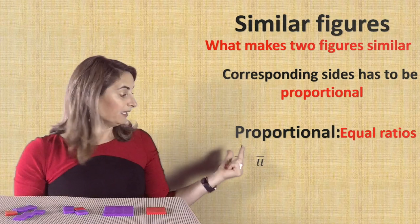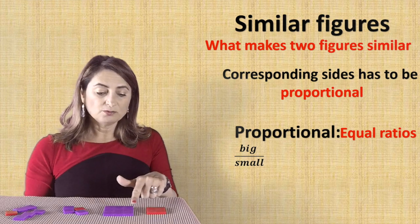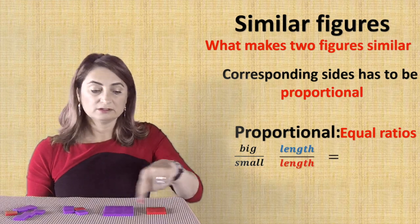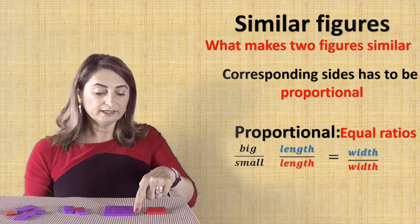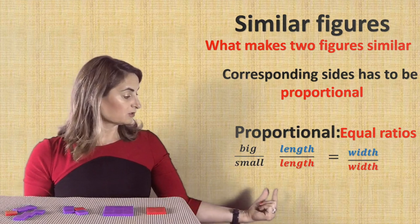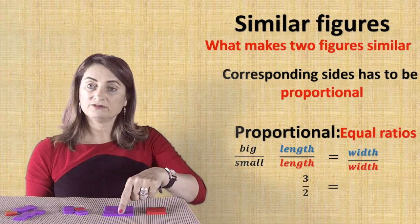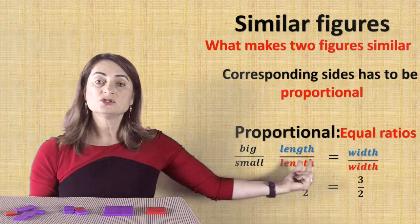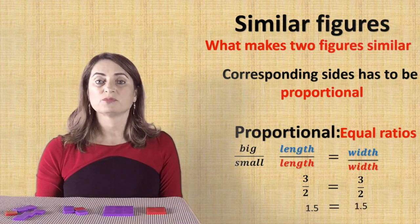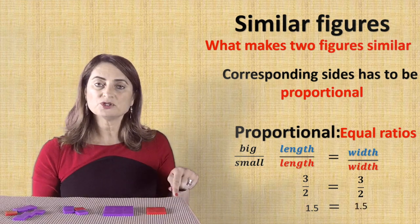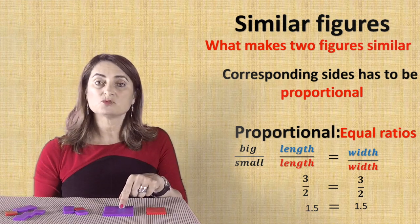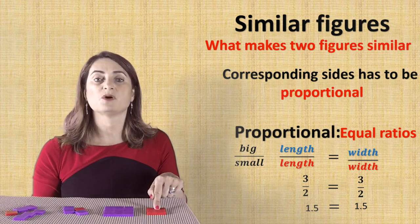Set up your ratio big to small — comparing side length to side length and width to width. The length of the big square is 3 and the length of the red square is 2, so that's 3 over 2. The width of the big square is 3 and the width is 2, so width to width is also 3 over 2. Simplifying gives 1.5 equals 1.5, which means the sides are proportional — those are equal ratios — and the big square is 1.5 times bigger than the small square.